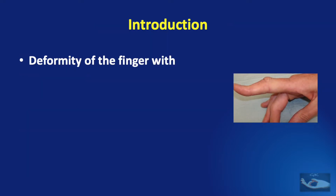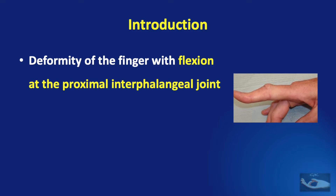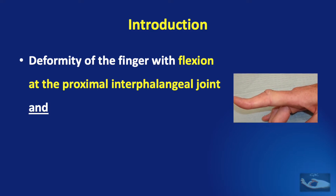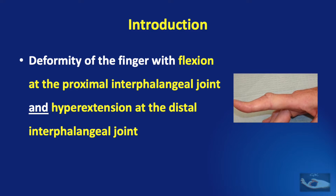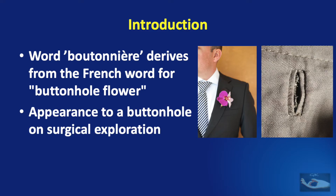The Boutonniere deformity refers to deformity of the finger with flexion at the proximal interphalangeal joint and hyperextension at the distal interphalangeal joint. The word Boutonniere is derived from the French word for buttonhole flower — it denotes the flower placed in the buttonhole of the coat lapel. This buttonhole is similar in shape to the defect seen intraoperatively when a Boutonniere deformity is explored.